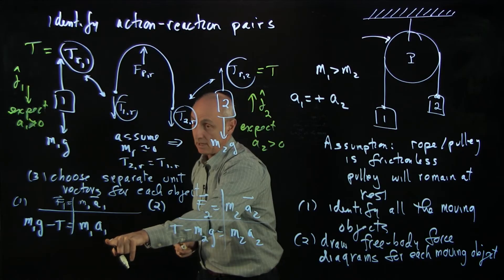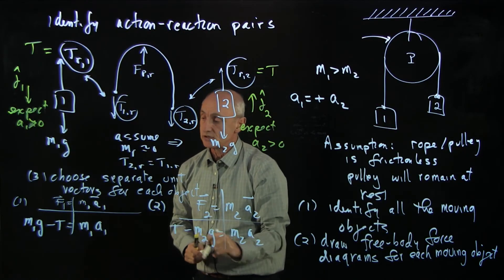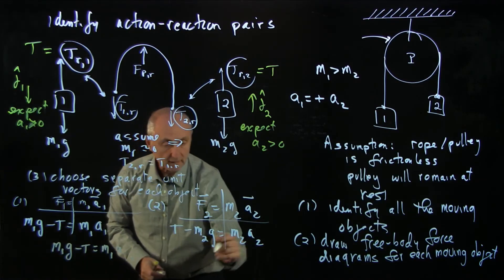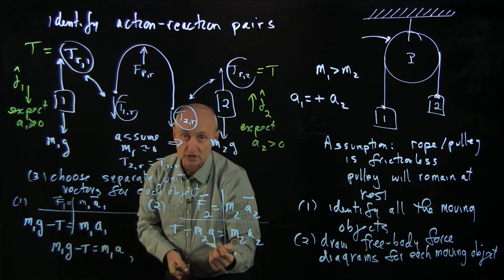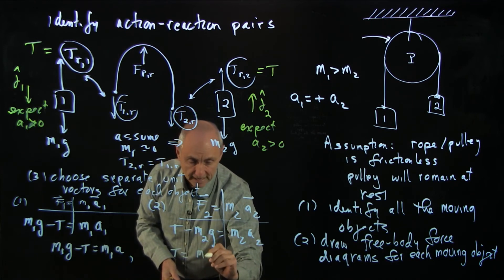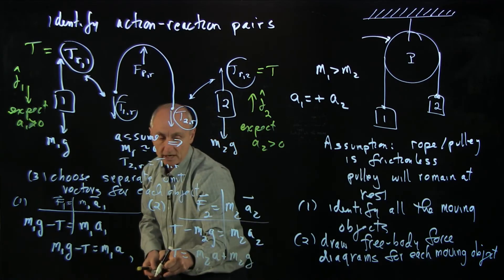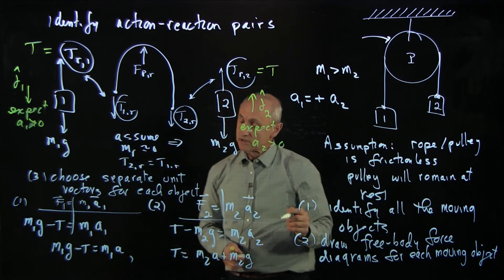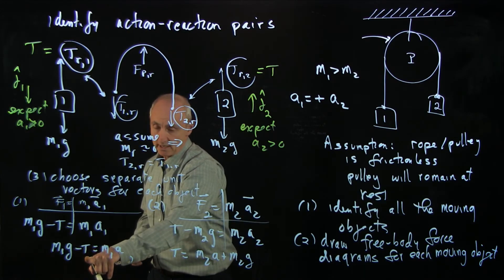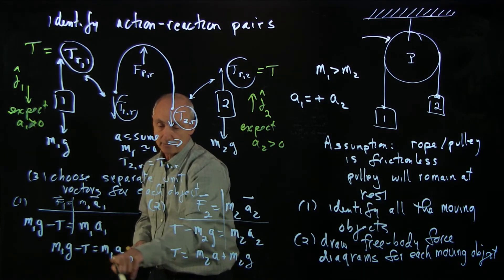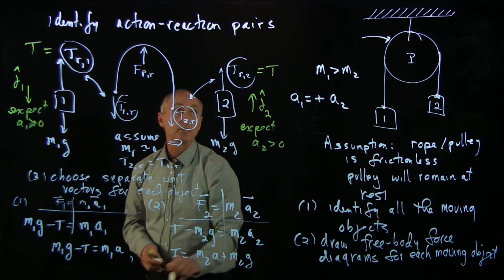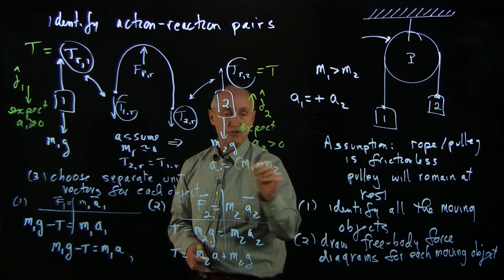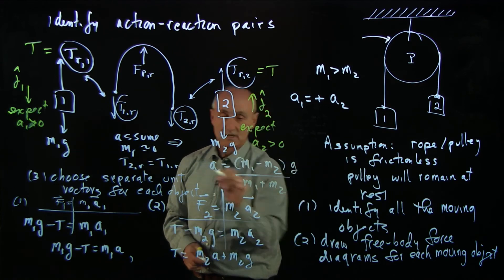These two a's are the same, and now I can solve my equations for t and a. Let's quickly do that. m1g minus t equals m1a. Let's solve for the tension for the accelerations here. t is equal to m2a plus m2g. When I substitute the t into that equation, we'll write that as if I put in the m2 minus m2a minus m2g, and bring the m2a to the other side. It's a little bit of algebra, but I think you'll trust me that this is m1 minus m2 g over m1 plus m2.